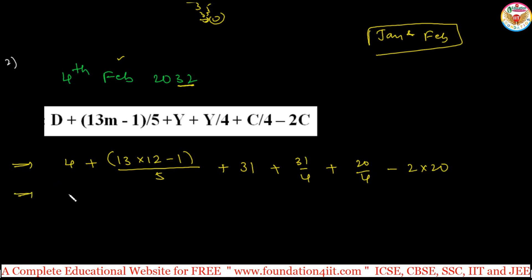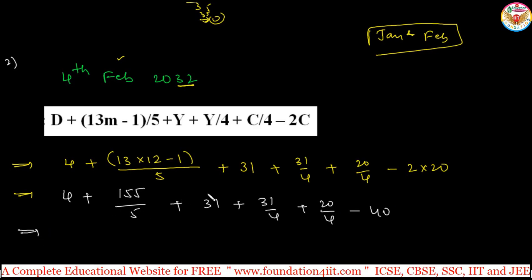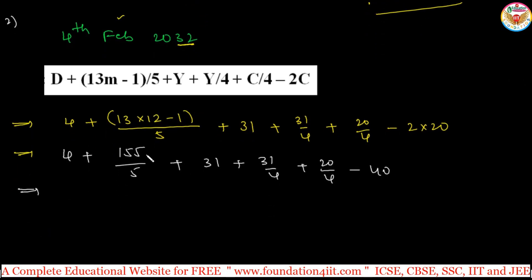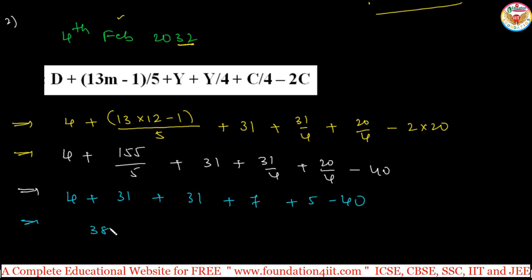Doing the step-by-step calculations: 4 + 31 + 31 + 7 + 5 − 40 = 38. Now divide 38 by 7. 7×5 = 35, so remainder is 3. Remainder 3 means: Sunday=0, Monday=1, Tuesday=2, Wednesday=3. So the remainder is 3, which is Wednesday. Therefore 4th February 2032 is a Wednesday.